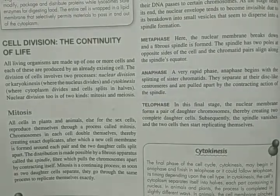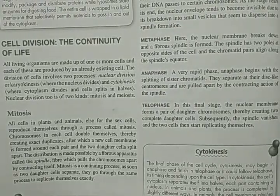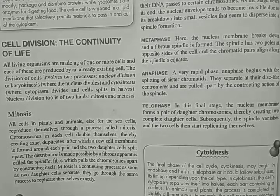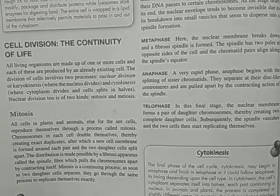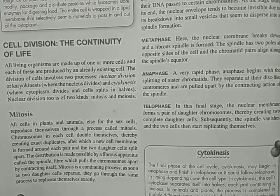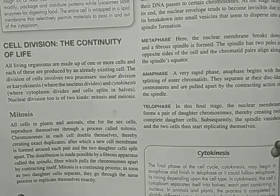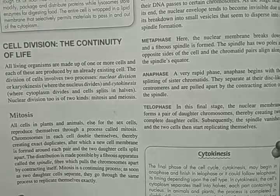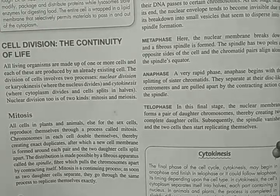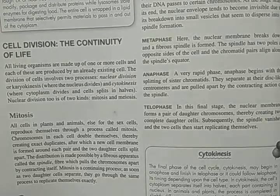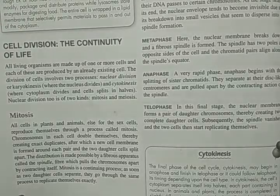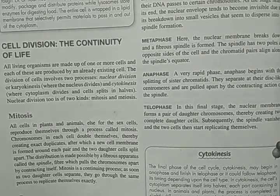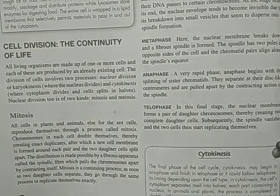Next is cell division — the continuity of life. Cell division involves nuclear division, called karyokinesis, for the division of the nucleus, and cytokinesis for the division of the cytoplasm. The cell splits in half. Cell division is of two kinds: mitosis and meiosis.